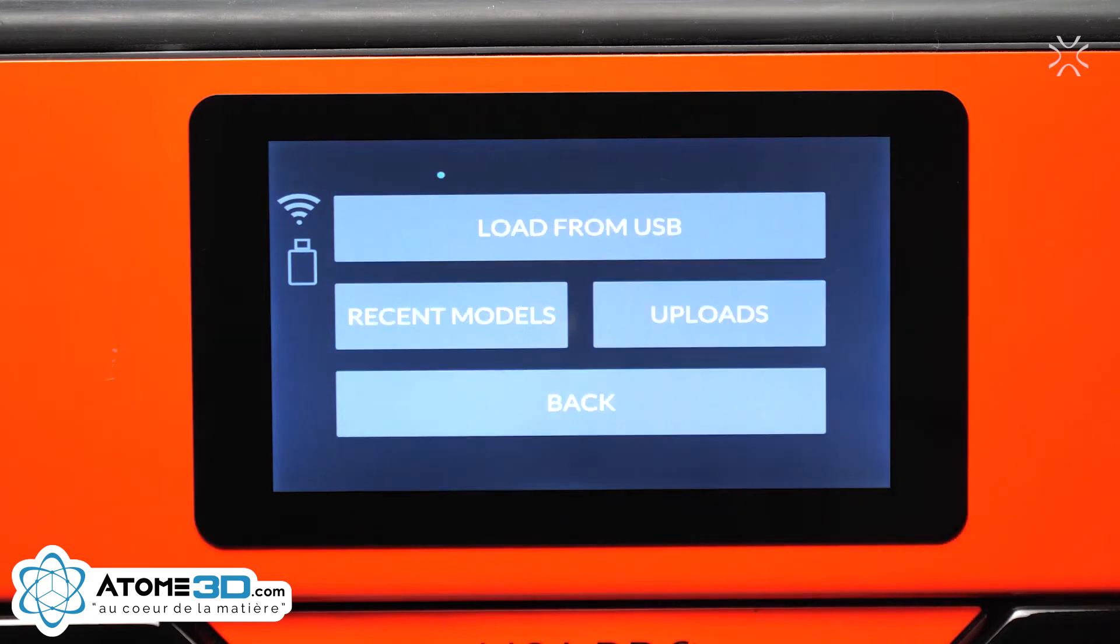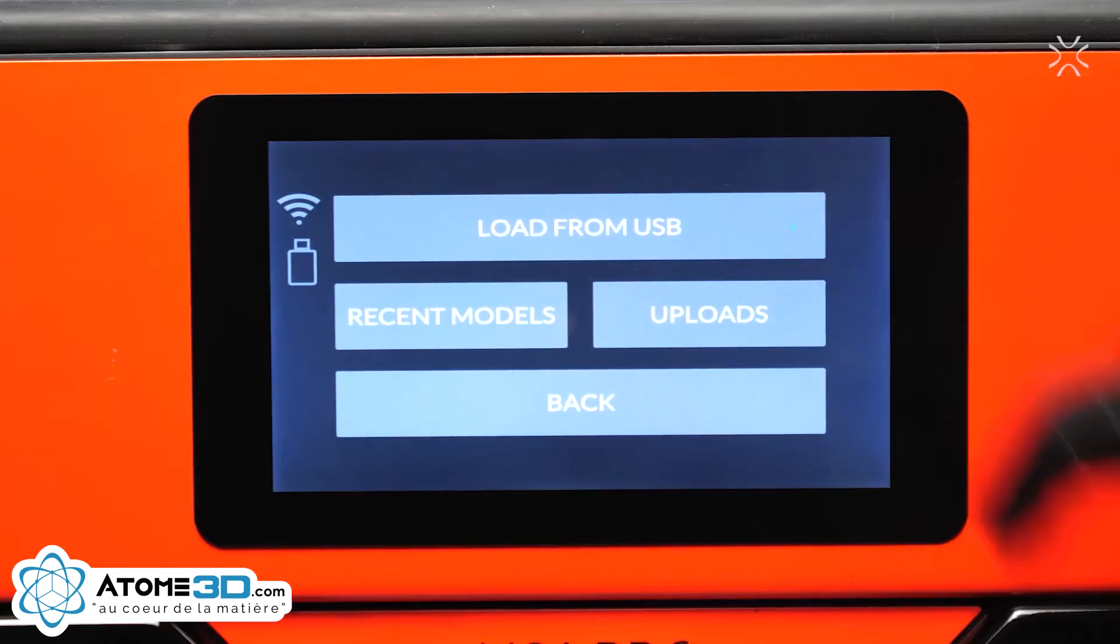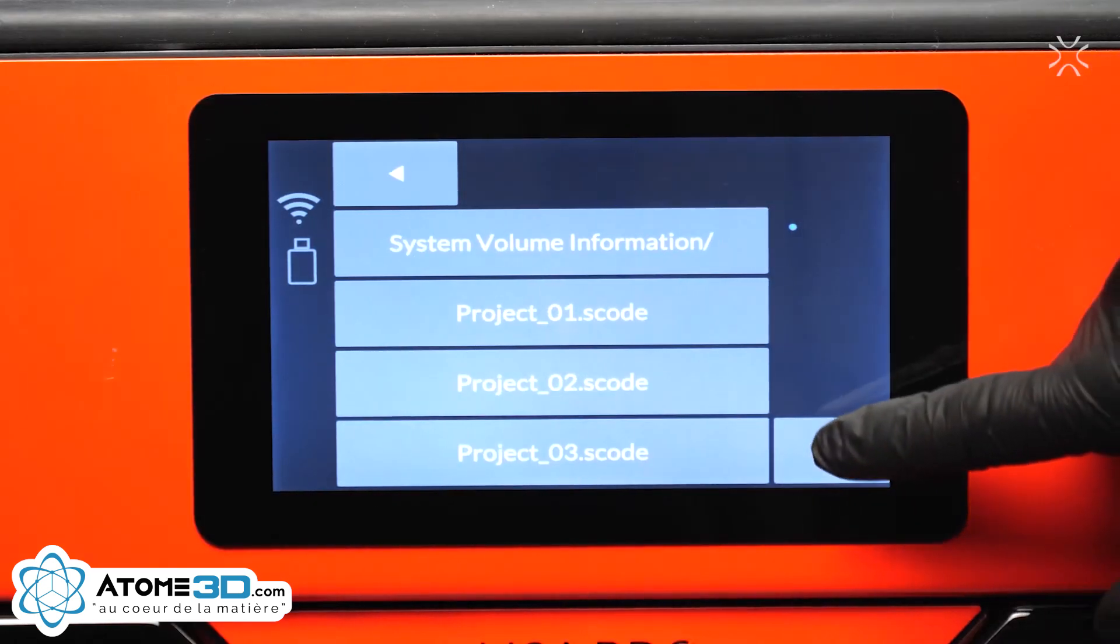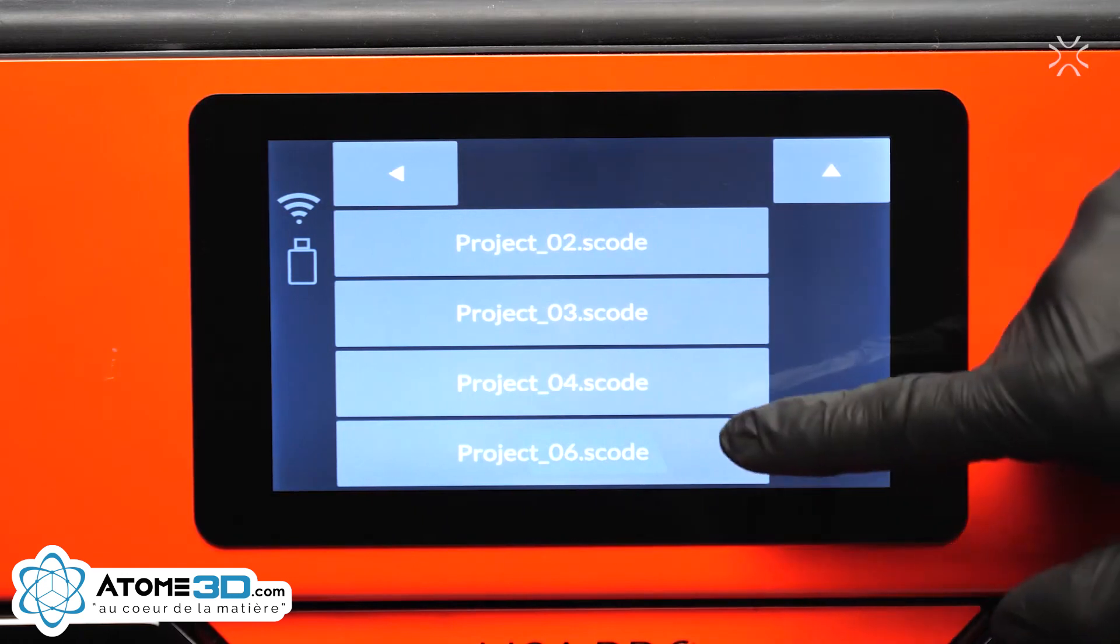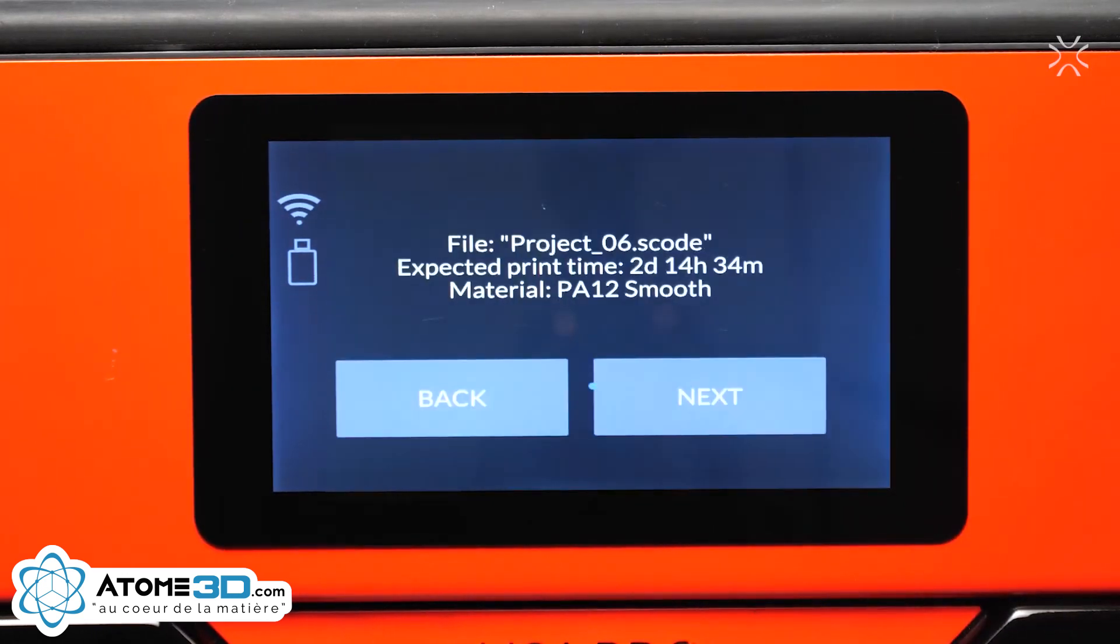After inserting the USB flash card, this screen will appear. The USB flash card icon confirms the device has been connected. Click Load from USB and select the file from the list. After selecting the desired model, you will get information about the expected print time and the material you need to use.